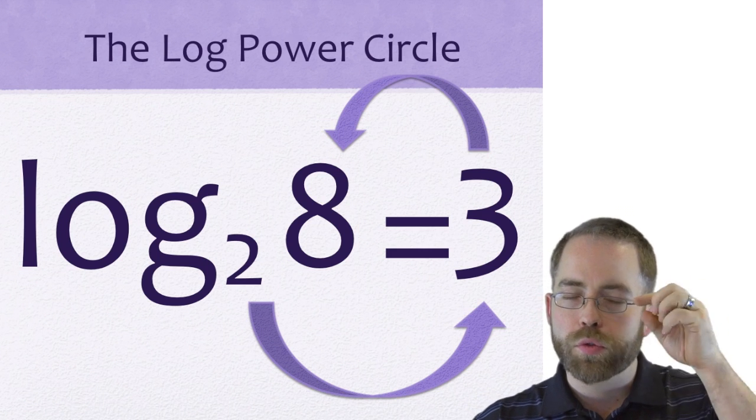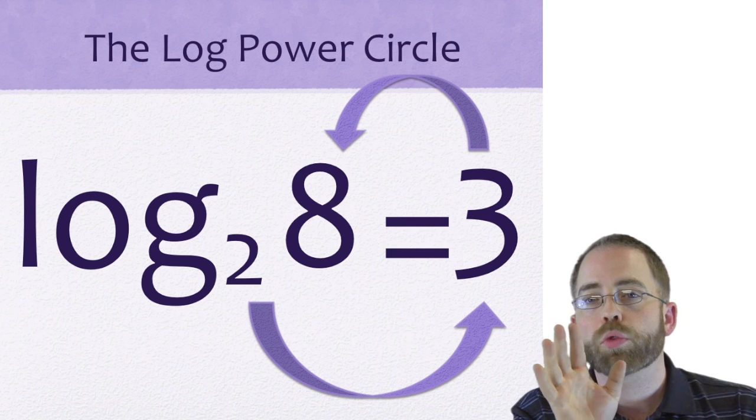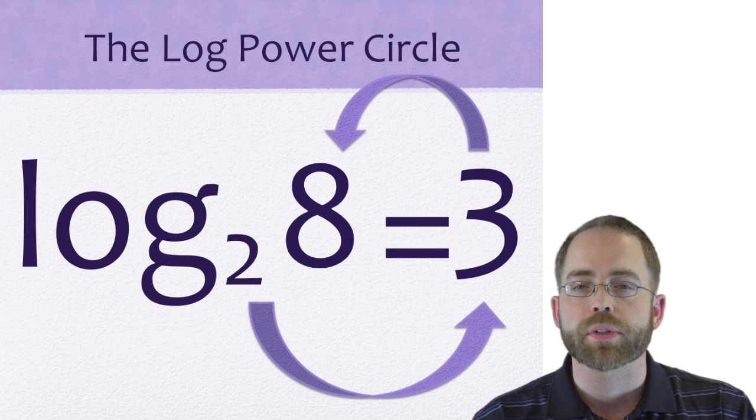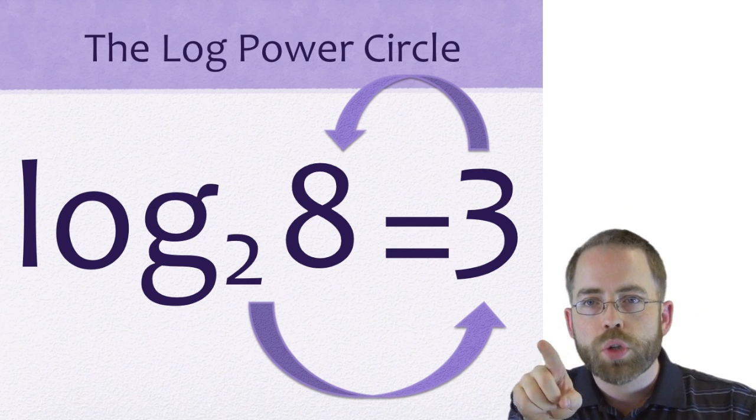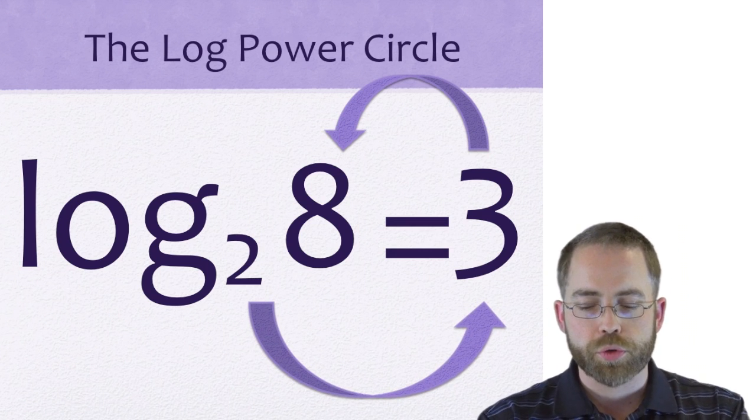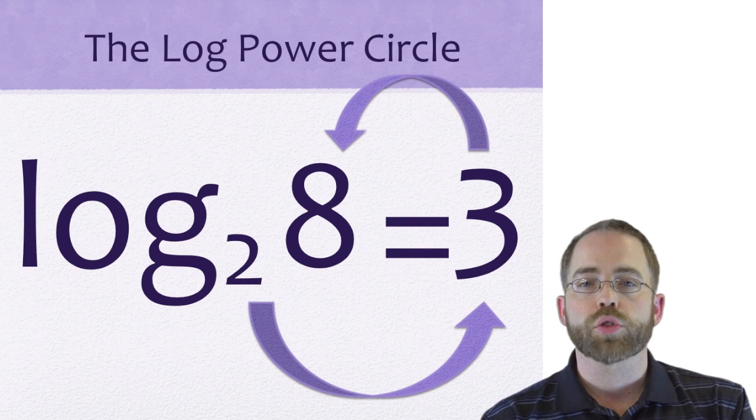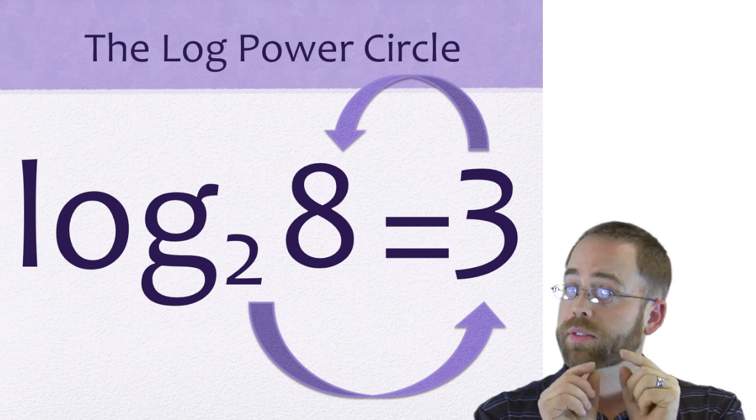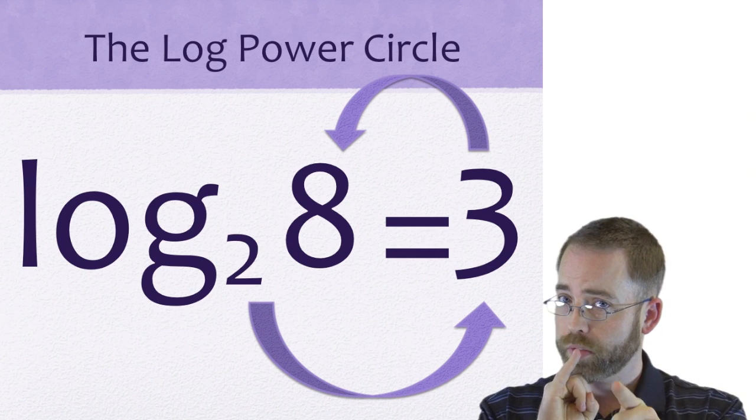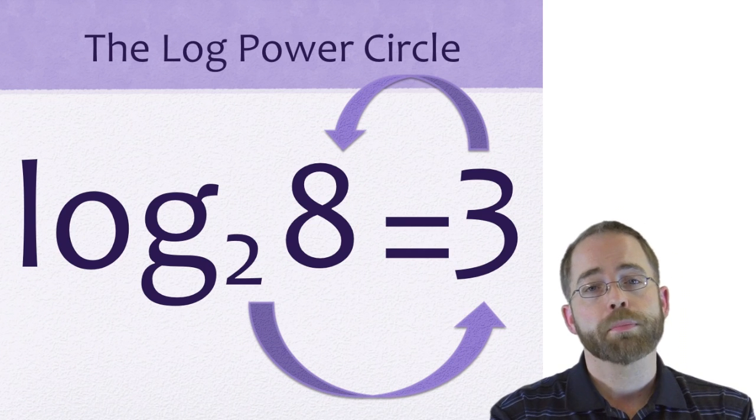If you need some sort of graphical thing, I usually end up drawing on your piece of paper to help you get it. For 2 to the 3 equals 8, you sort of trace out this circle from 2 to the 3, and then the circle keeps going from the 3 to the 8. You start at the base—the base is home base, see what I did there—then you go to the other side and come back with an answer.